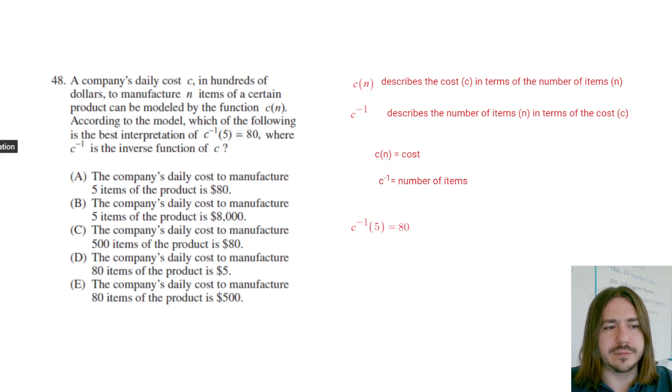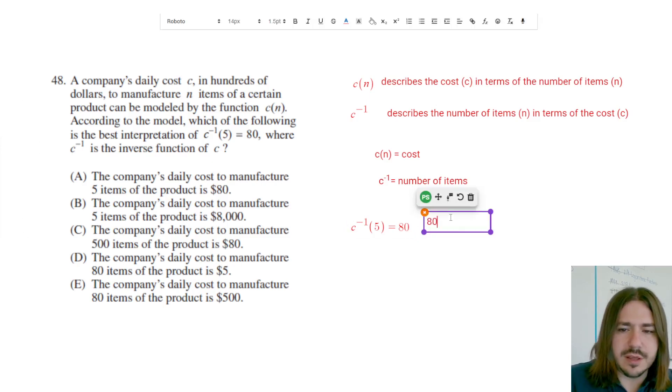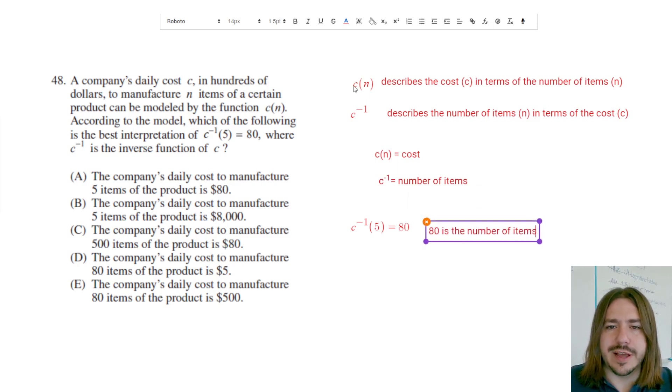Let's type that out. So 80 is the number of items because remember it's kind of the opposite of the original function.